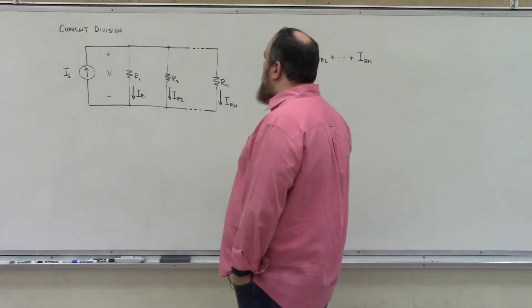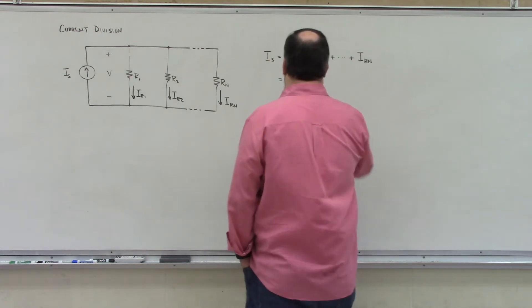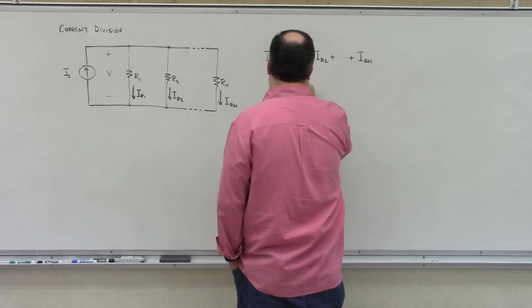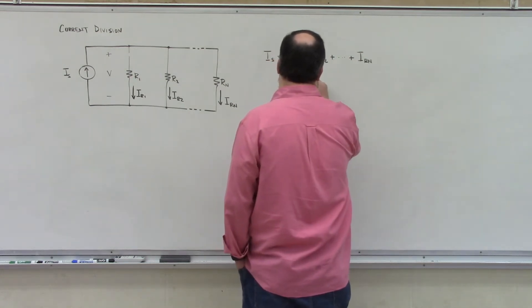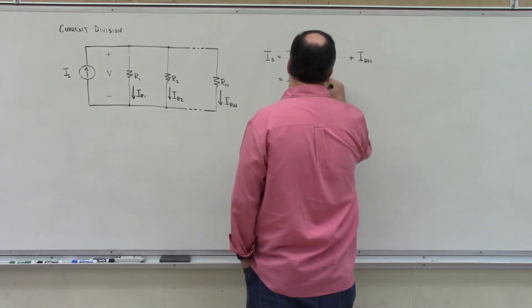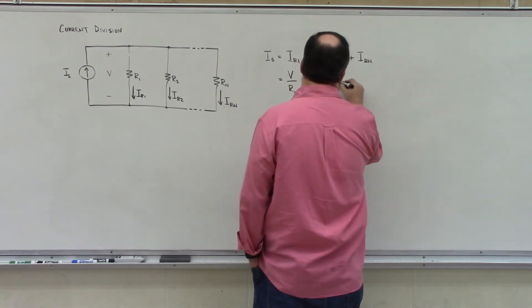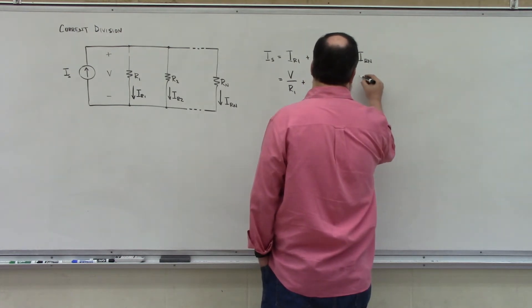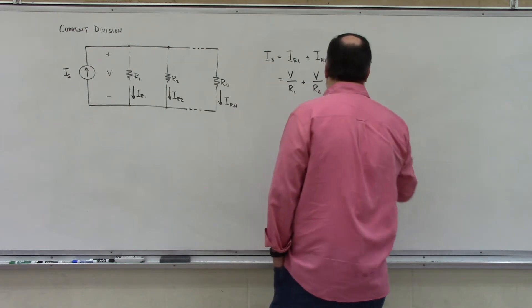So IR1 becomes V divided by R1. IR2 becomes V divided by R2. And finally, IRN becomes V divided by R2.